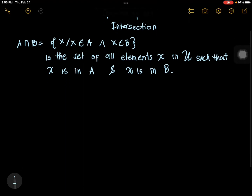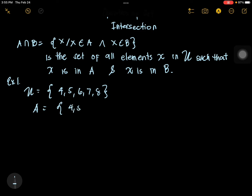Let's have an example. Example number one: if we have the universal set with elements 4, 5, 6, 7, 8, and you have set A with elements 4, 5, 6, and set B with elements 5, 6 — what is A intersection B?